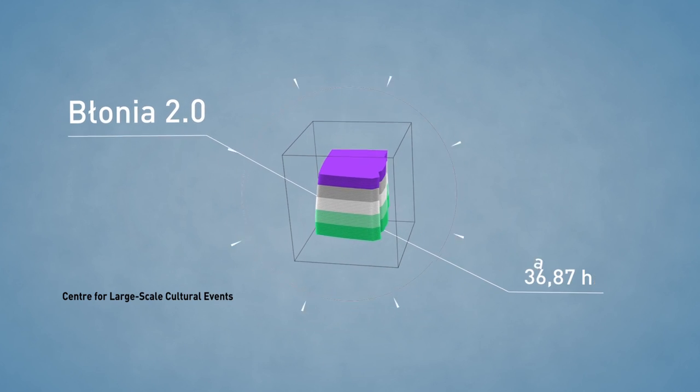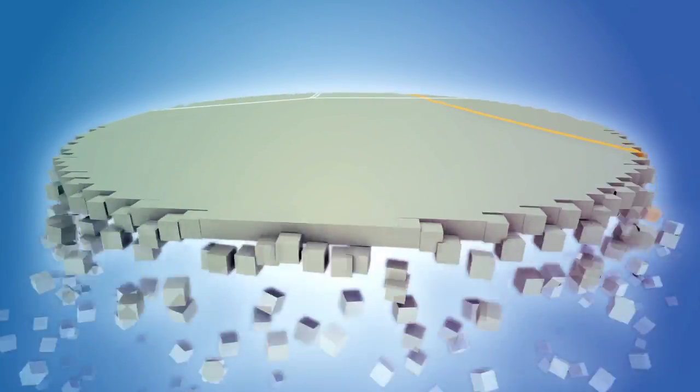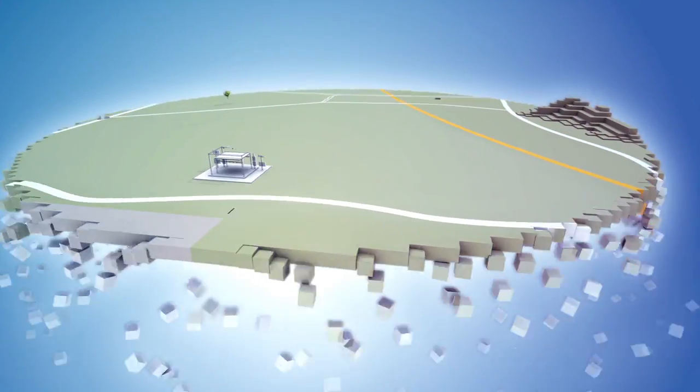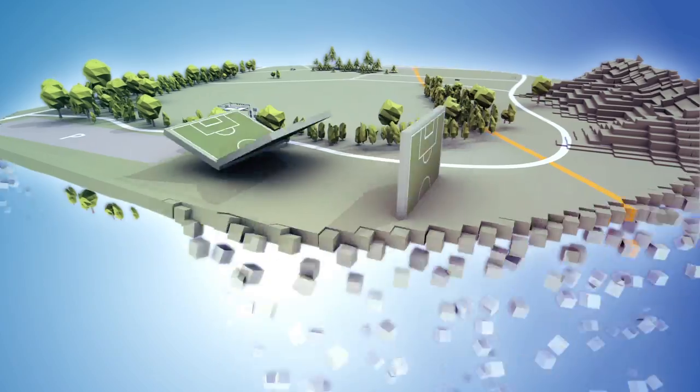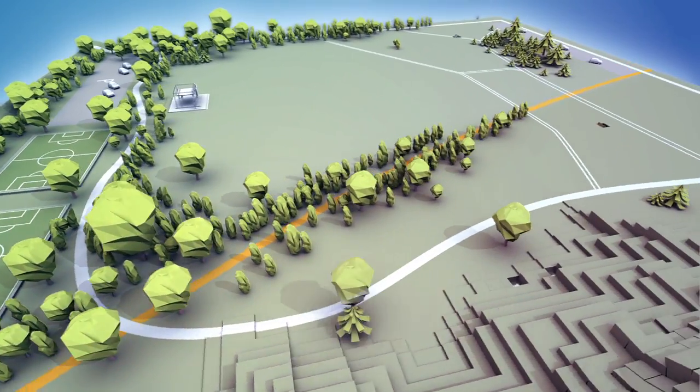Buonia 2.0 will occupy an area of almost 37 hectares. The area will feature greenery, sports facilities and services. There will be sports stadiums and recreational facilities.